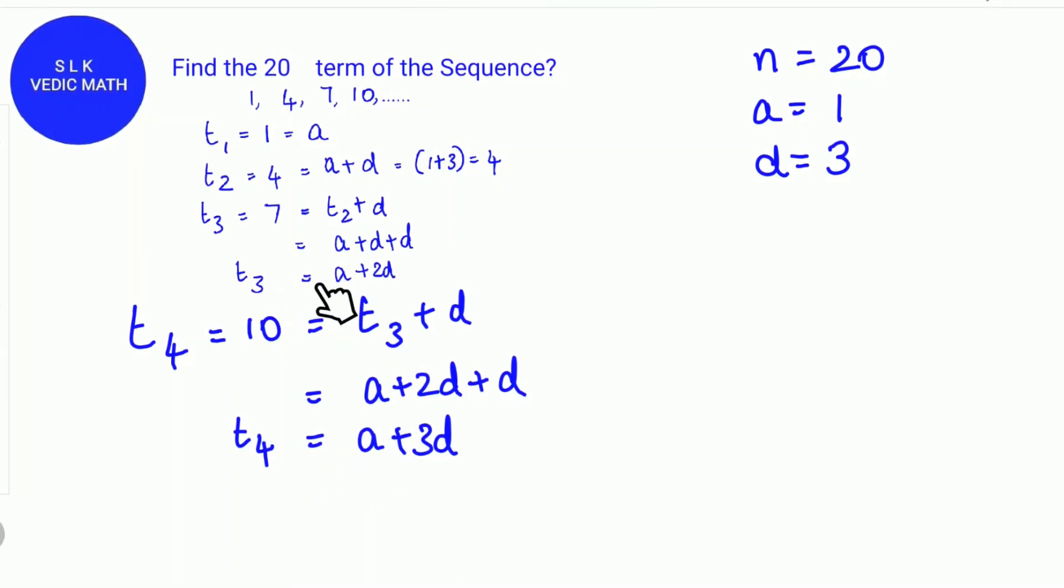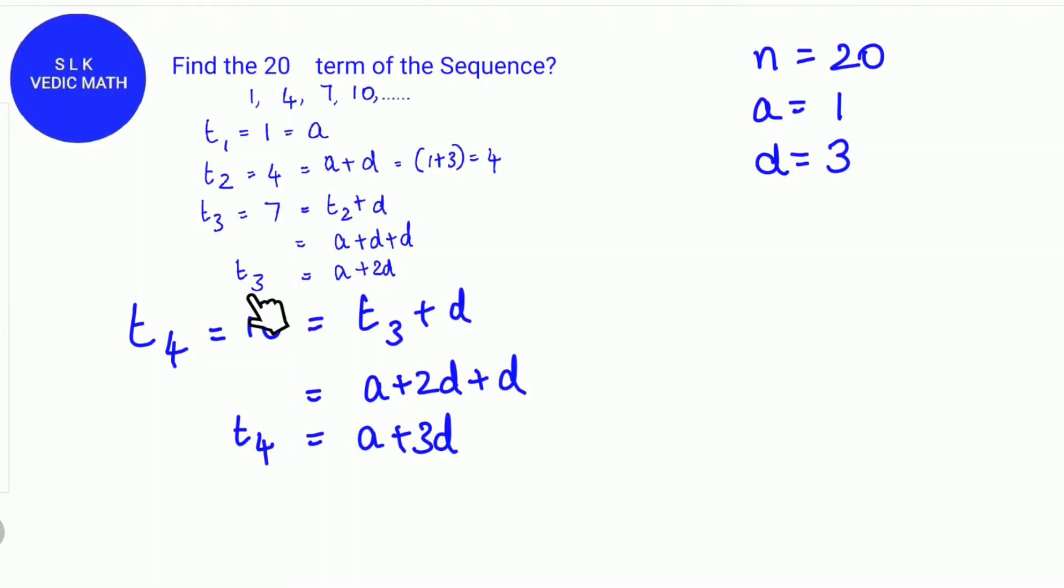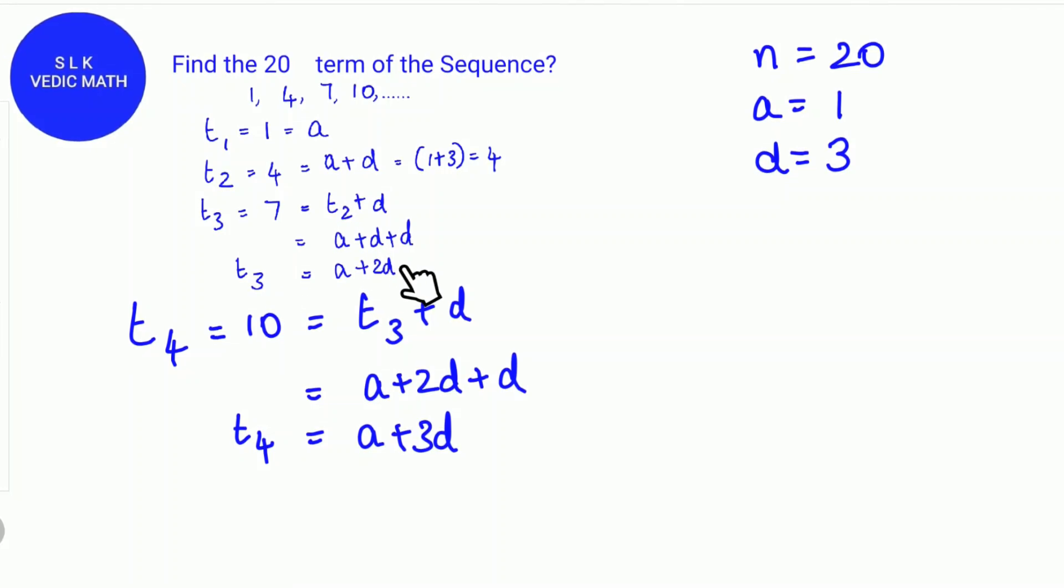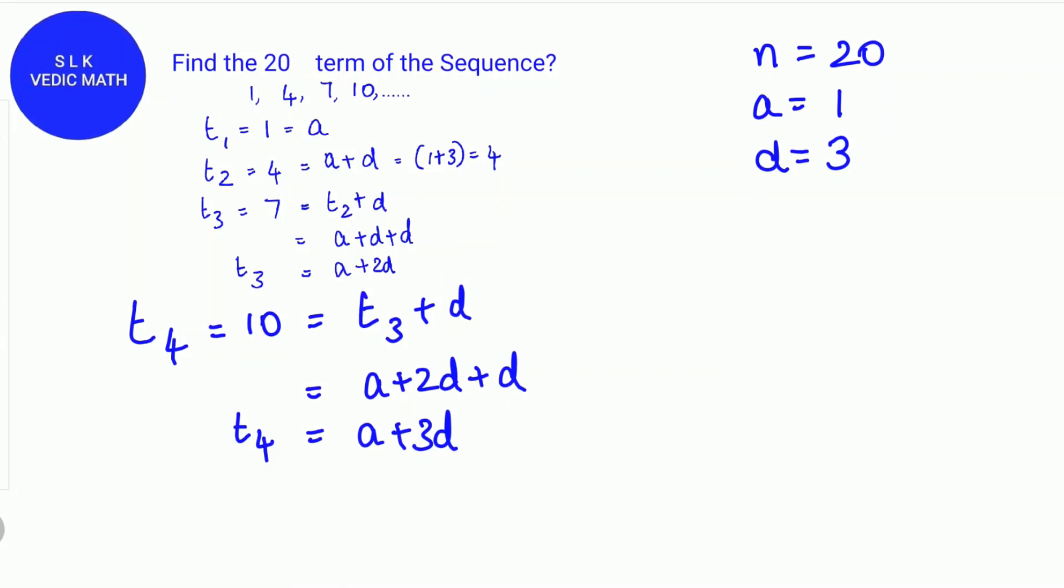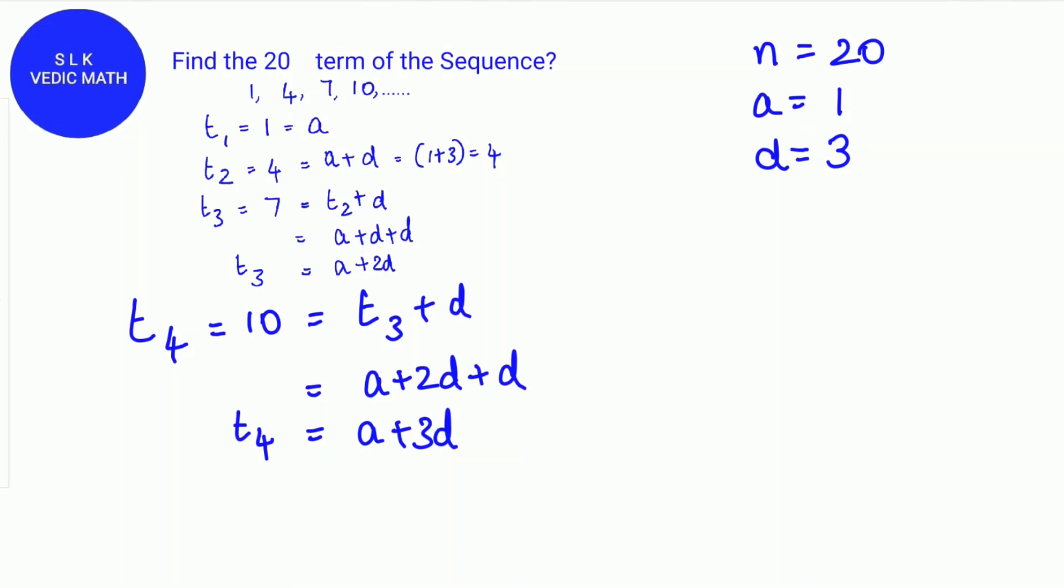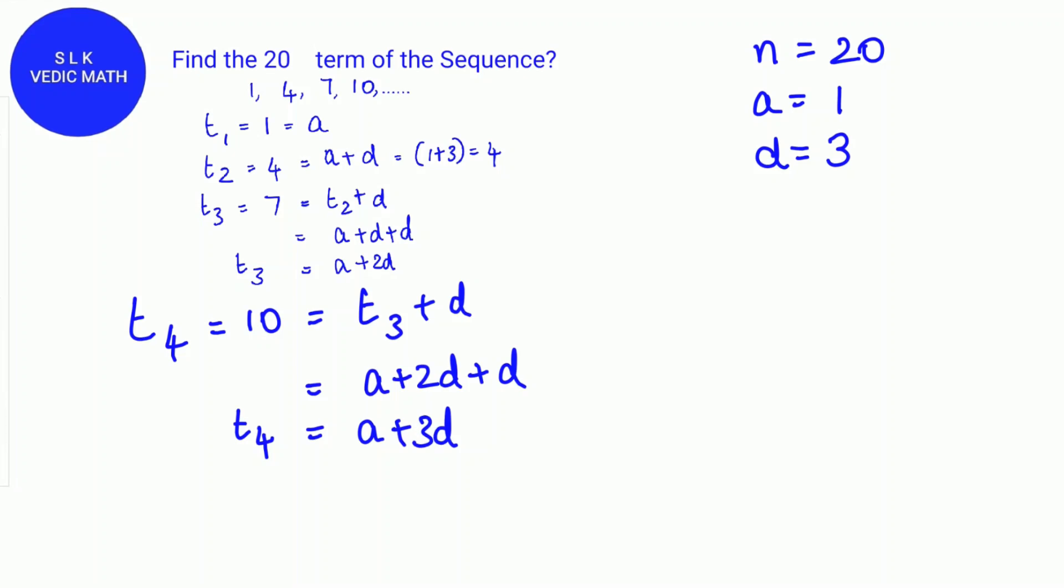T3 is a plus 2d. When it is the third term, the difference d is multiplied 2 times and added with the first term a. Here we notice that the difference d is multiplied by 1 less than the nth term and added with the first term a.